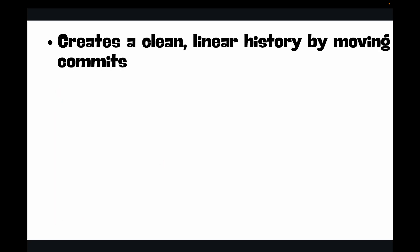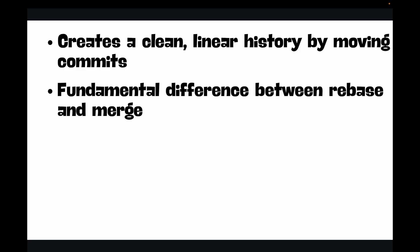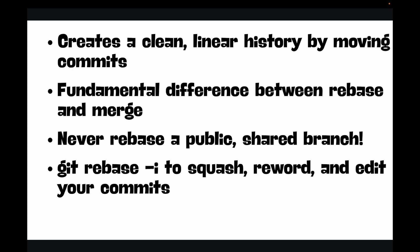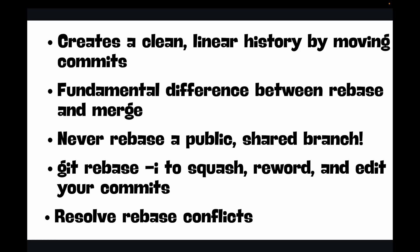You have just unlocked a very powerful, advanced git skill. You now know that rebase creates a clean linear history by moving commits, the fundamental difference between rebase and merge, the golden rule to never rebase a public shared branch, how to use 'git rebase -i' to squash, reword, and edit commits, and how to confidently resolve rebase conflicts. This is a professional-level tool that, when used correctly on your private branches, will make your contributions cleaner and easier for your teammates to review.